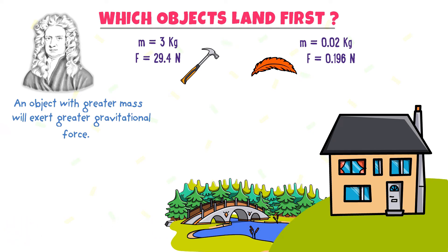Now, according to Newton's second law of motion, F is equal to MA or A is equal to F upon M. Now, plug in all these values in this equation to find the acceleration of the hammer. A is equal to 29.4 N upon 3 kg.